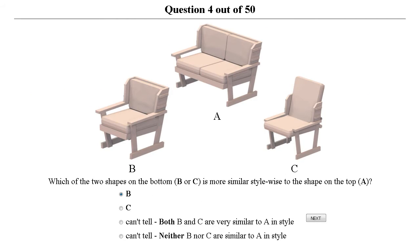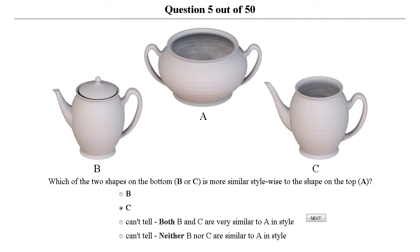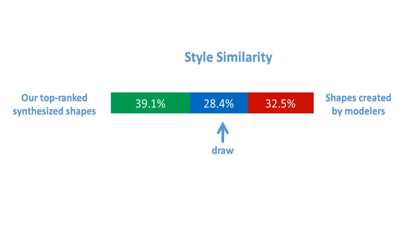These alternatives included shapes found in style coordinated scenes that included the exemplar and were manually created by modelers. Participants perceived our synthesized shapes as at least similar style-wise to the exemplars as these manually created shapes.